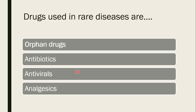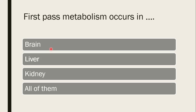Next question: drugs used in rare diseases are called — antibiotics, orphan drugs, antiviral, or analgesic? The correct answer is orphan drugs. Drugs used in rare diseases, for example anti-cancer drugs, are called orphan drugs.